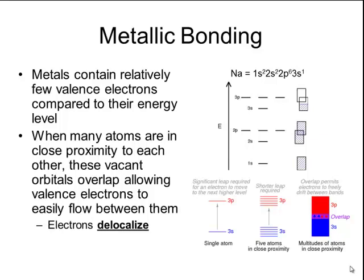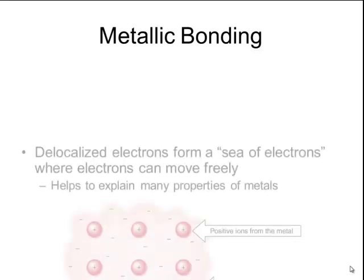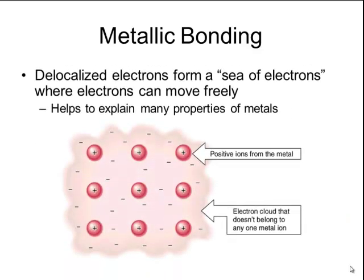That one valence electron for sodium is no longer associated with just the 3s orbital, and so we say that that electron has delocalized. With a lot of sodium atoms in close proximity to each other, their delocalized electrons will form a sea of electrons, where the electrons can move freely between each atom.